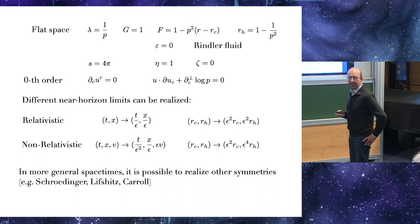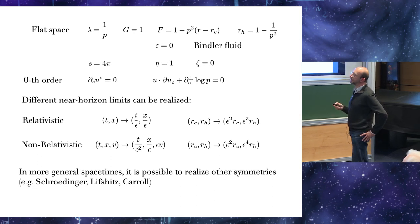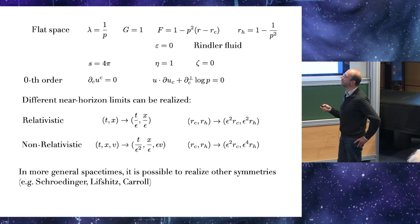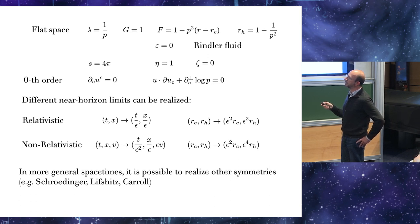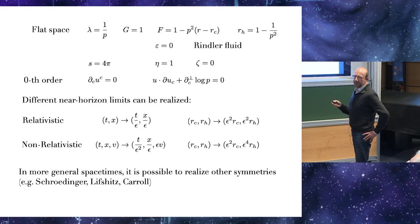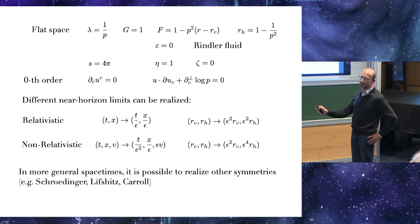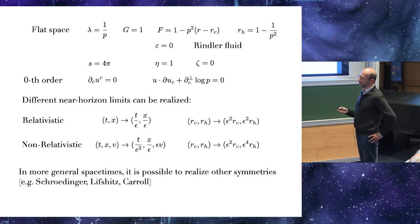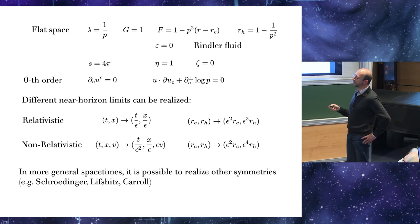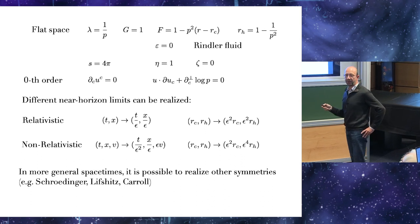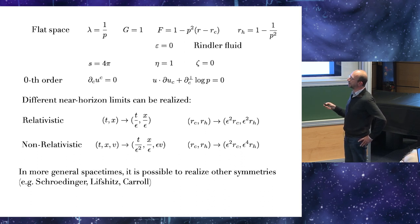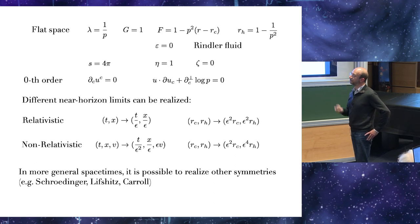But you can also do a non-relativistic scaling where you rescale time and space differently. Then you also need to rescale the velocity. This is the scaling symmetry of the non-relativistic Navier-Stokes equations. And this can also be realized, but just by taking a different scaling of this quantity. In which case the horizon radius goes to zero faster than the cut-off surface. And so this shows that the near-horizon limit depends on how you take the limit. And in more spacetimes, one can also realize other symmetries, which is the symmetry of the Schrodinger equation or Lifshitz scaling symmetries, or Carrollean symmetries that we have heard about yesterday actually.